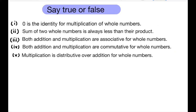True or False — Question 1: Is 0 the identity for multiplication of whole numbers? False. The correct answer is 1. One is the identity for multiplication of whole numbers.